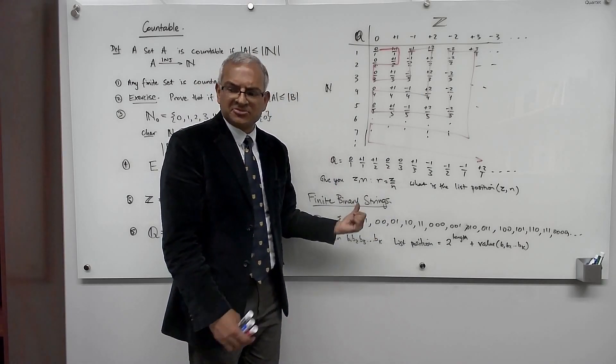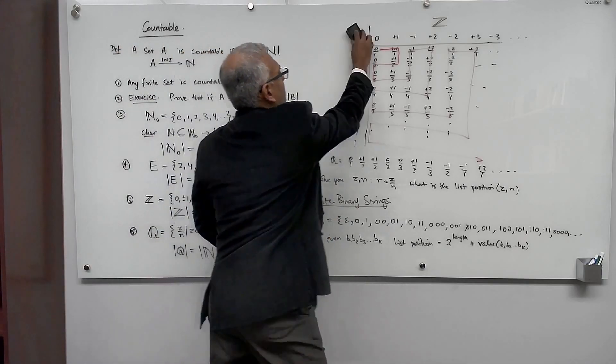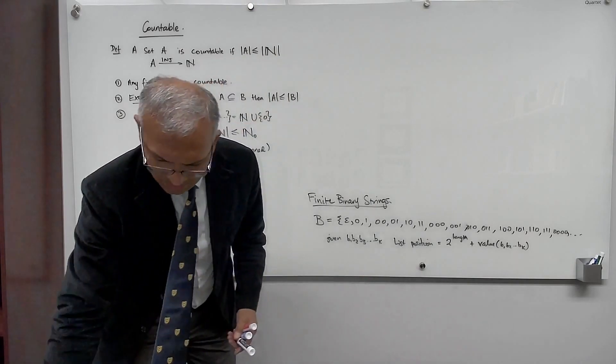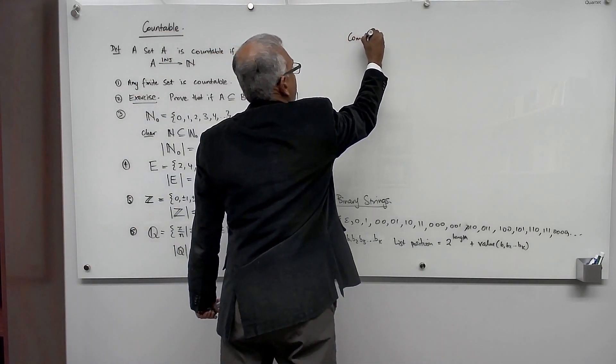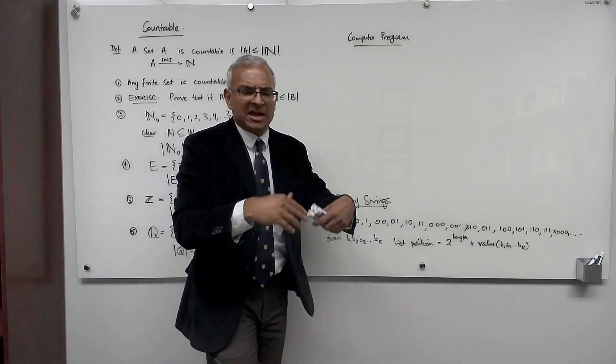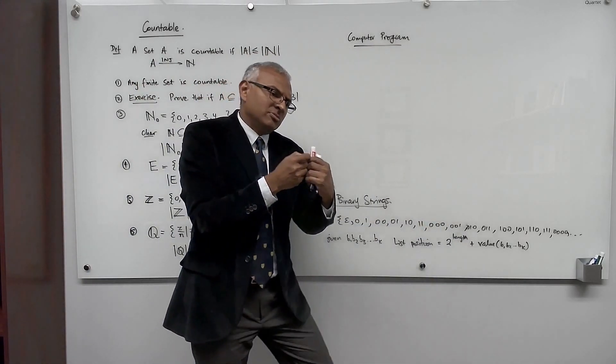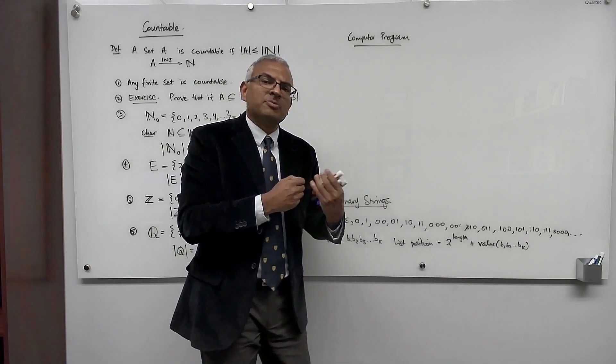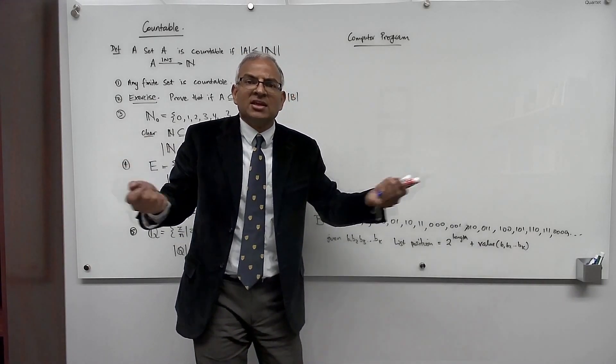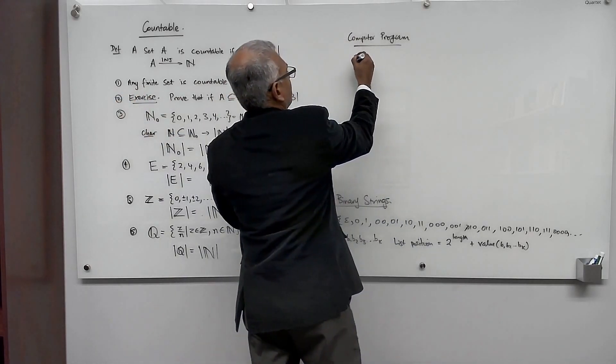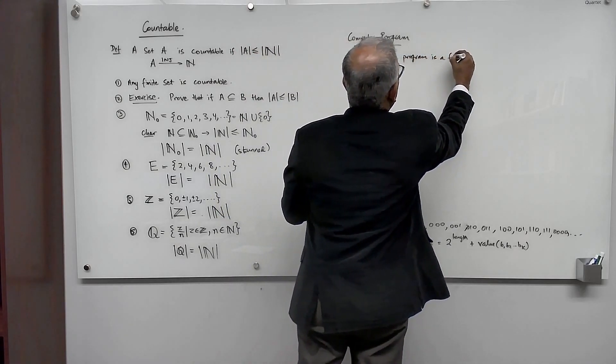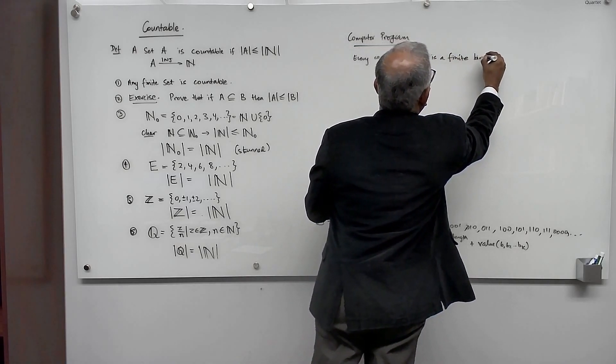Why do we care about finite binary strings? So computer programs. A computer program. So you write your computer programs in whatever fancy language you want. C++, Java, Python, whatever. At the end of the day this fancy program has to be converted to a bit string so that it can be represented to your CPU. So every computer program is a finite binary string. It's a finite string of bits.